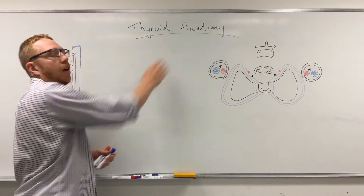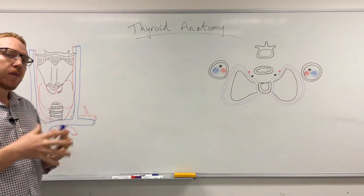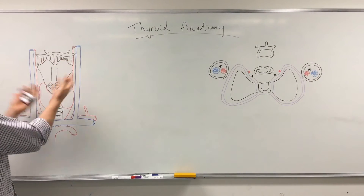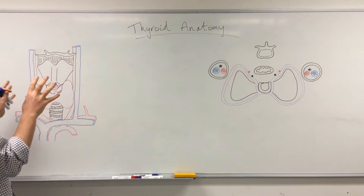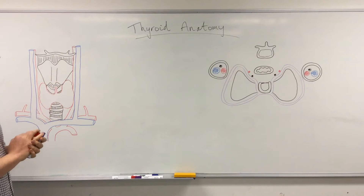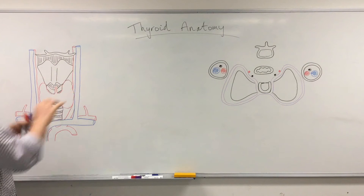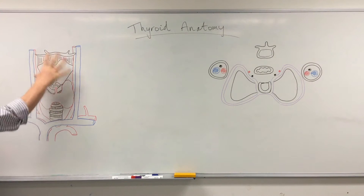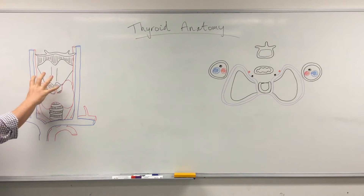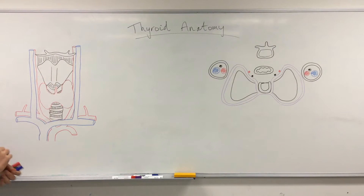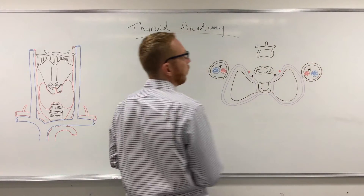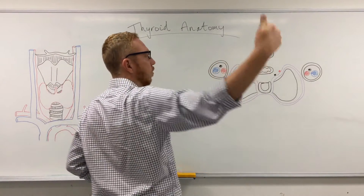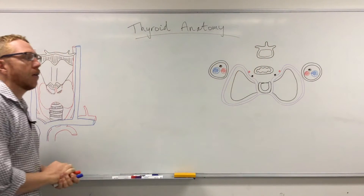Welcome to this lecture on the anatomy of the thyroid. This lecture will go through where the thyroid is located, what structures are around it, and what blood supply brings blood to it and drains blood away. There are two main images we'll look at today: a frontal plane view looking in from the front of the neck, and a cross section — a cut through looking down superiorly to inferiorly on the thyroid.